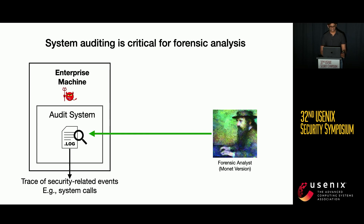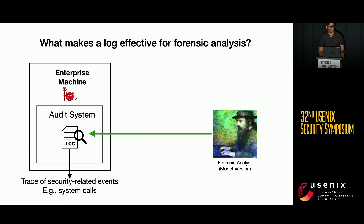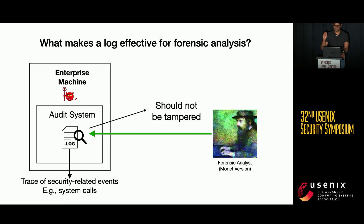Given the use case of logs, we must ask ourselves: what properties does the analyst require from these logs to be effective in achieving the goal of accurate forensic analysis? We can reason based on first principles that there are two key prerequisites. First, the logs have not been tampered with and can be retrieved from the compromised machine for analysis. Therefore, the analyst should be able to trust that the audit system provides integrity and availability guarantees for the logs.